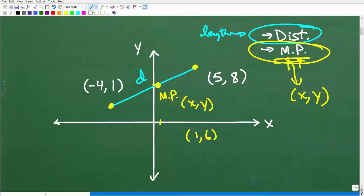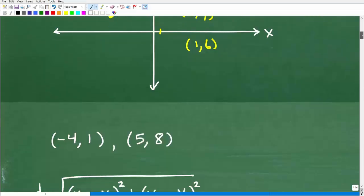Okay, so distance formula and midpoint formula, that's what it is. So let's go ahead and actually do this problem with these two coordinates, negative 4, 1, 5, 8. We'll go ahead and first find the distance between these two points, and then we'll find the midpoint between these two points. And let's go ahead and get into this right now.